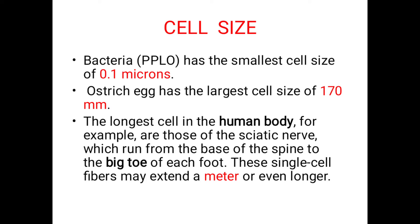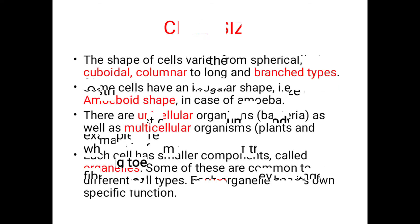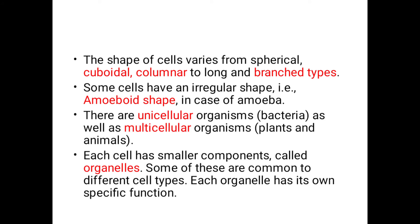The longest cell in human body, for example, are those of sciatic nerve, which run from the base of spine to the big toe of each foot. These single-cell fibers may extend a meter or even longer. The shape of cells varies from spherical, cuboidal, columnar to long and branched types.